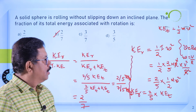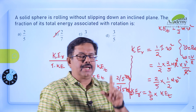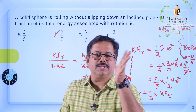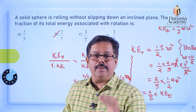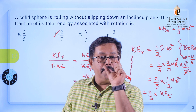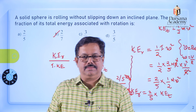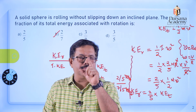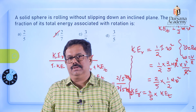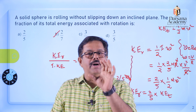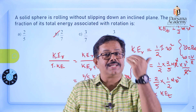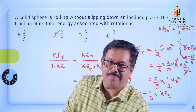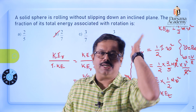Here is the shortcut summarized: take the coefficient of MR² in the moment of inertia formula for any rolling body. Multiply that coefficient by KET to get the rotational kinetic energy. This works for all rolling bodies.